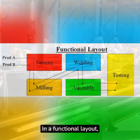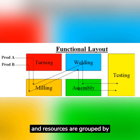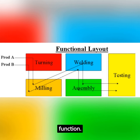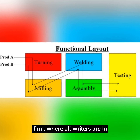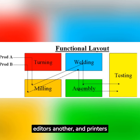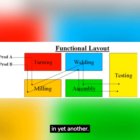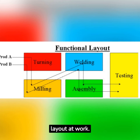In a functional layout, equipment, people, and resources are grouped by function. Imagine a newspaper firm where all writers are in one department, all editors in another, and printers in yet another. This is functional layout at work.